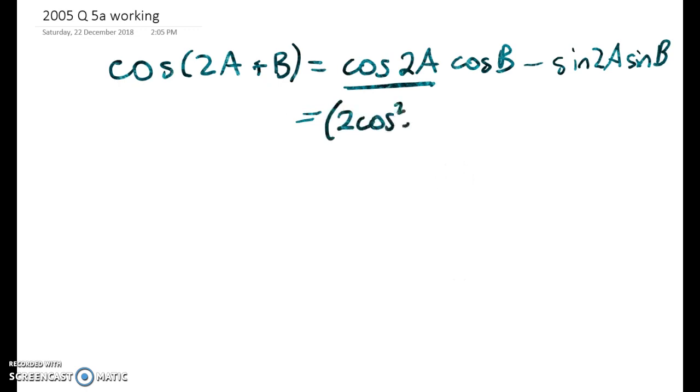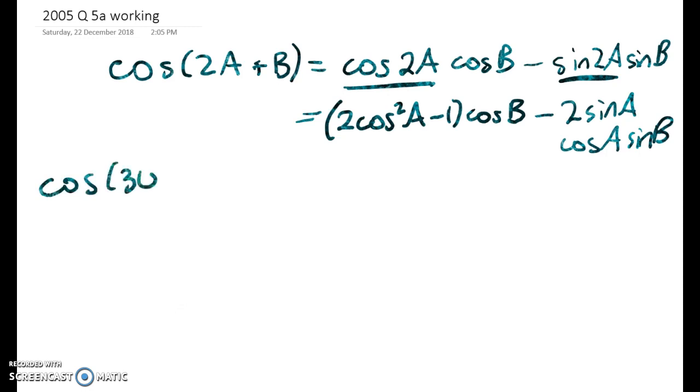Okay, so what am I going to do now? Well, I'm going to do something with my double angle cosine. I know that I want to end up with all cosines in my answer, so the version I'm going to choose is 2 cos squared a minus 1 times cos b minus. Now there's only one thing I can do with that. It's going to be 2 sin a cos a sin b.